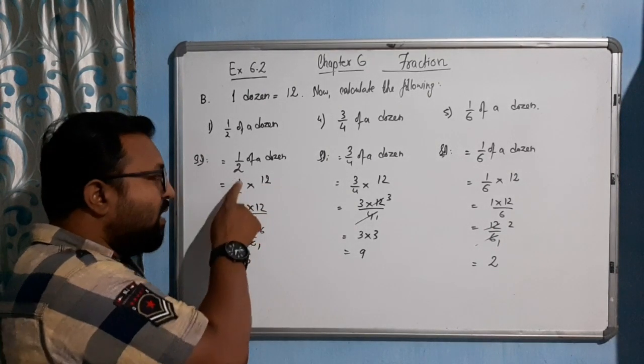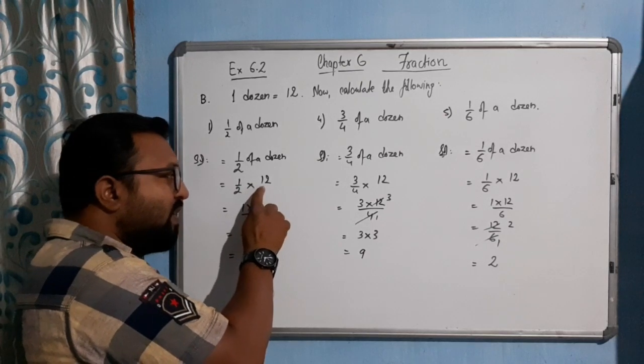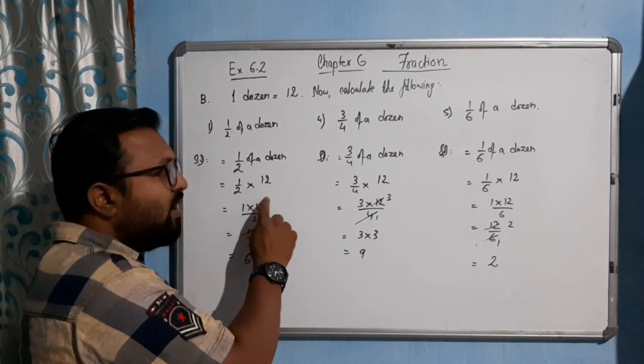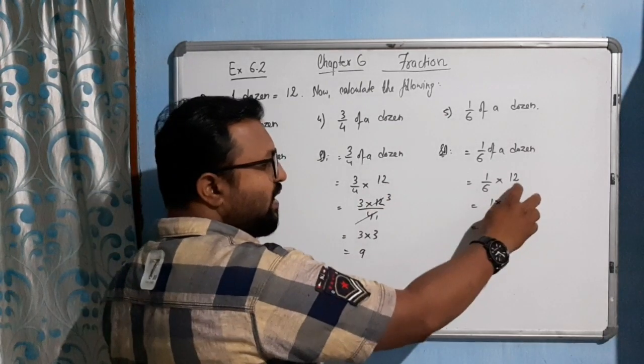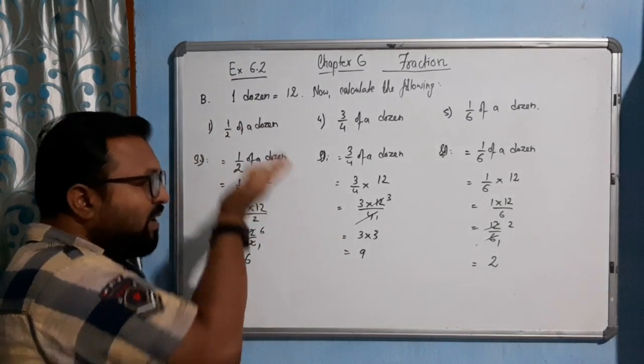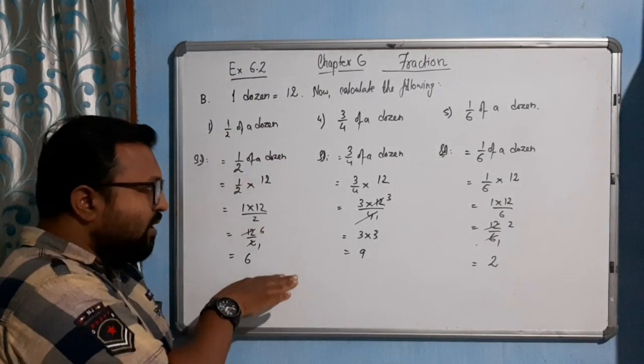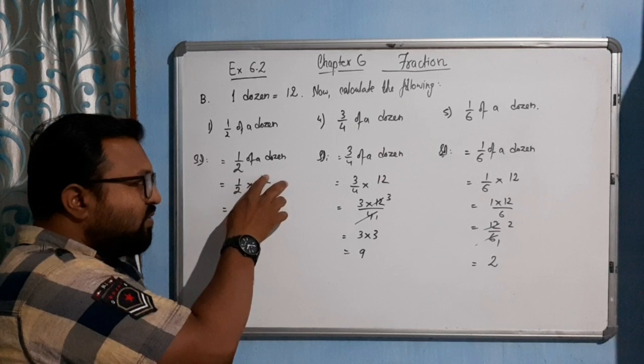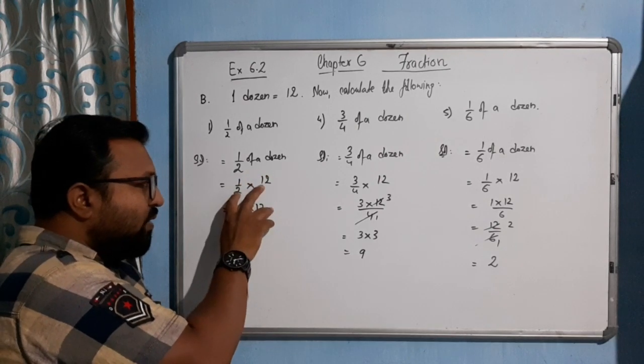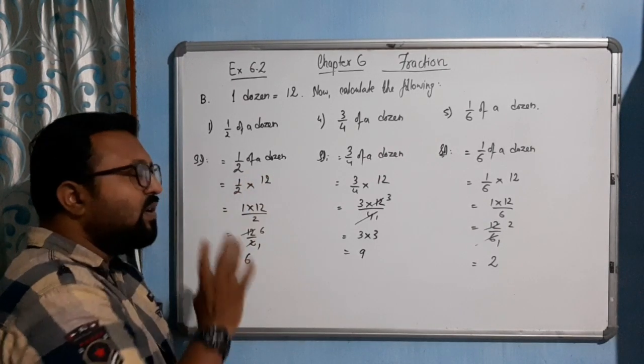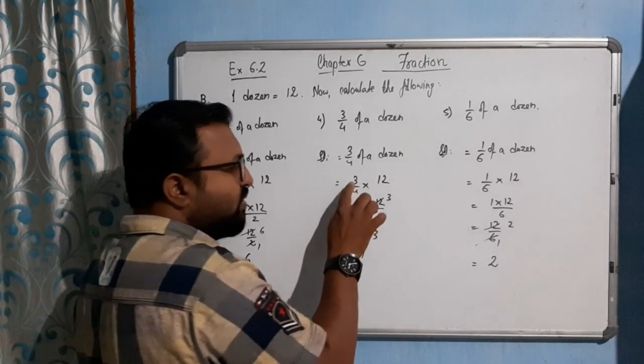Sometimes they used to multiply this thing. See, remember, 1 by 2 into 12. 12 means what? 12 by 1, here 12 by 1. 12 by 1 means 12 is in numerator place and 1 is in denominator place. So multiplication is there, so 12 is multiplied by 1 and 2 is multiplied by 1.